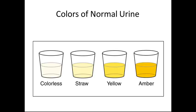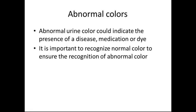Normal urine colors are described as colorless, straw, yellow, and amber. Colorless means no color — we do not use the term 'clear.' Clear means transparent but can contain color, whereas colorless means no color at all. Straw has a slight yellow tinge; yellow is a little darker; and amber is the most concentrated urine, a very dark yellow. Abnormal urine colors could indicate disease, medication, or dye such as CT contrast dye.